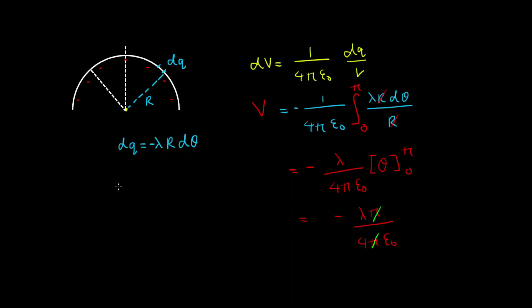And the pi is cancelled so therefore the potential is equal to minus lambda on 4 epsilon 0.